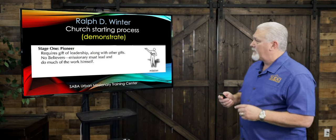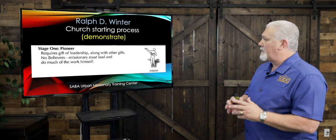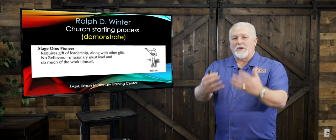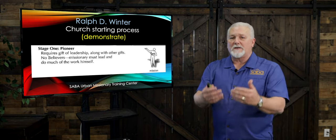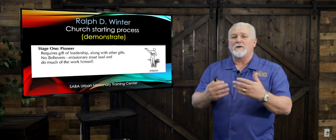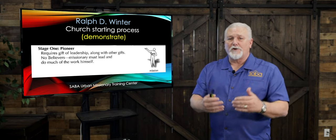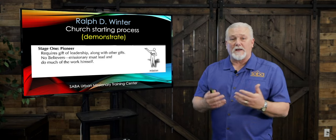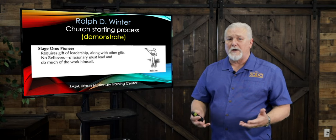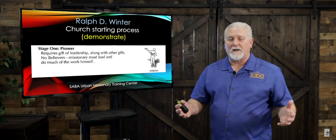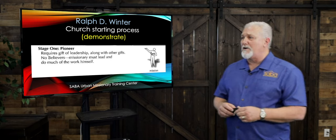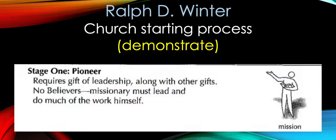In the first stage, which we call Demonstrate, in the church planting process a missionary goes to a people group and begins demonstrating and communicating the gospel. He is demonstrating how the church is to be started — how to teach God's Word, how to baptize, how to do all the things a normal church does in its function. The missionary must lead and do the work himself, since there are no believers yet.